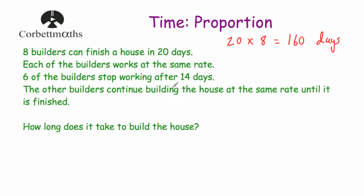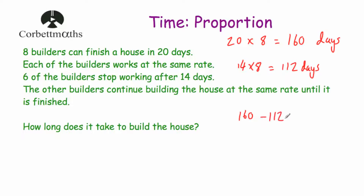We know that 8 builders worked on the house for the first 14 days. So let's work out how many days worth of work those 8 builders spent. If we take 14 days and multiply it by 8 builders, that tells us 14 times 8 is equal to 112 days worth of work. So if we take the 112 days away from the 160 days, 160 minus 112 is equal to 48 days worth of work still needed to finish the house.